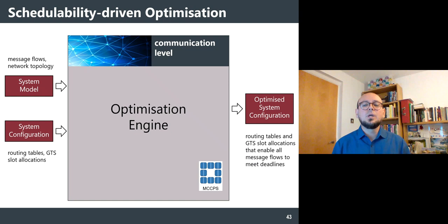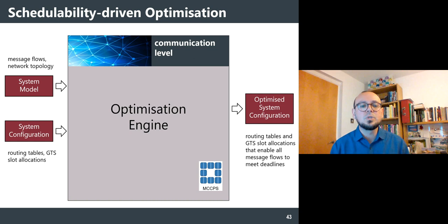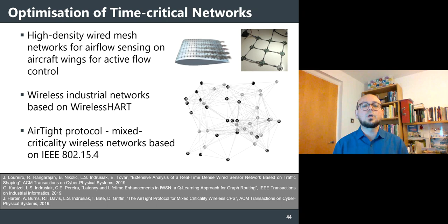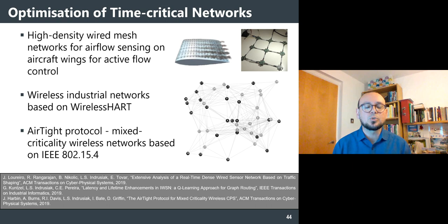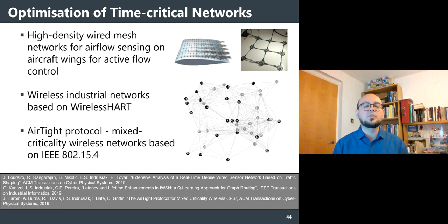At the communication level, we used a similar approach to optimize traffic of message flows over specific networks by improving configurations such as routing tables and guaranteed throughput slot allocations, ensuring critical message flows meet their deadlines. We have done work in high-density wired mesh networks for airflow sensing, wireless industrial networks based on WirelessHART, and the Airtide protocol providing mixed-criticality support for wireless networks based on IEEE 802.15.4.